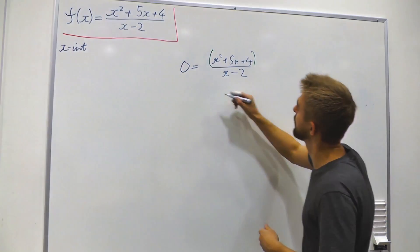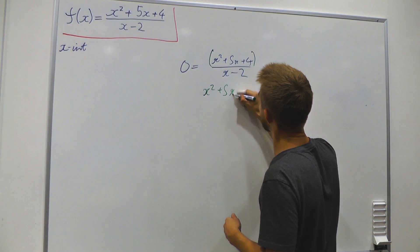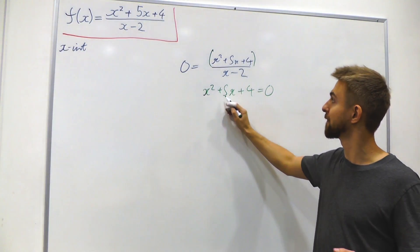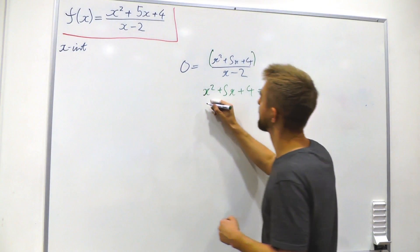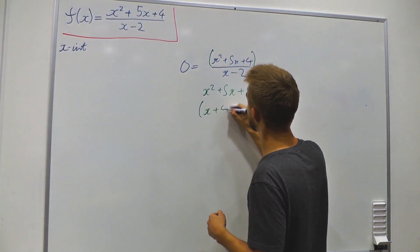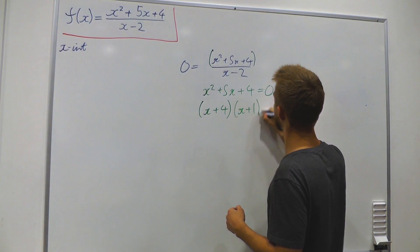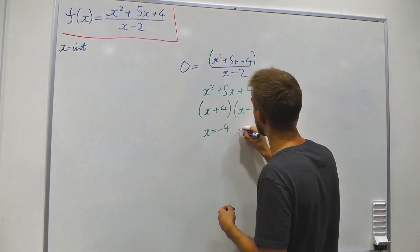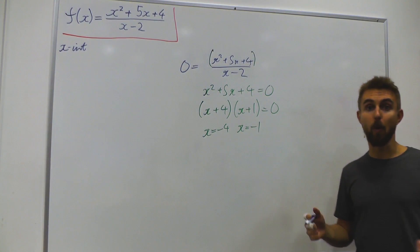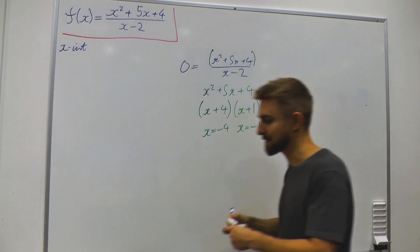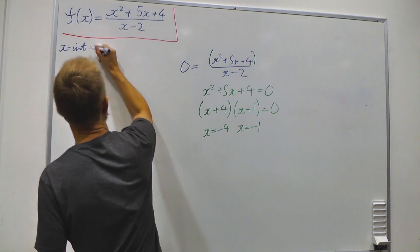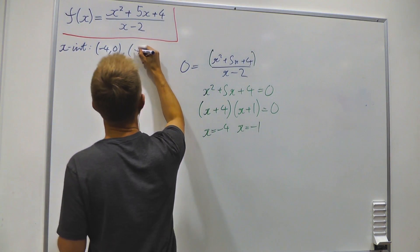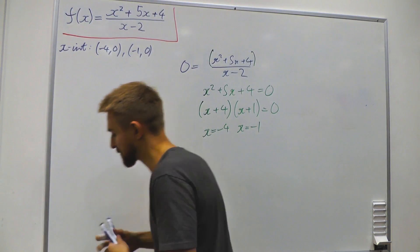Taking the top line on its own: x squared plus 5x plus 4 equals 0. We could plug that into the quadratic formula with coefficients 1, 5, and 4, or we can spot that it factorizes: (x + 4)(x + 1) = 0. Therefore our x-intercepts are x = −4 and x = −1. We put those into our treasure chest: (−4, 0) and (−1, 0).